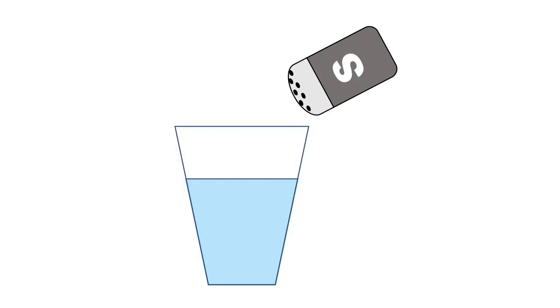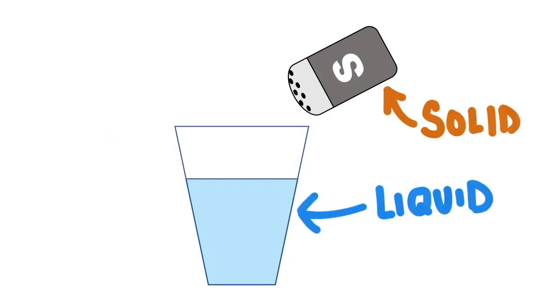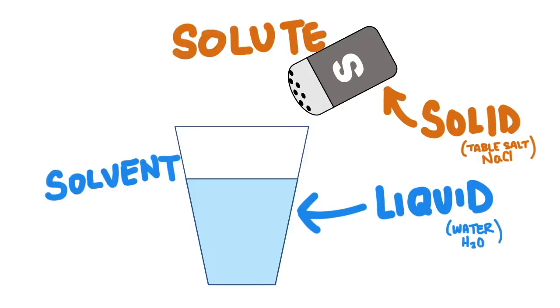We're probably most familiar with solids dissolving into liquids, so we will focus on that process as we describe dissolving. In this case, the solid, like table salt, is called the solute, and the solute dissolves into the solvent, which in this case is water. Together, the solute and the solvent become the solution.